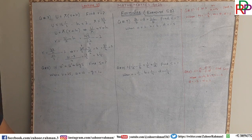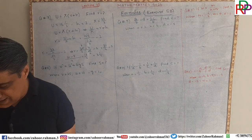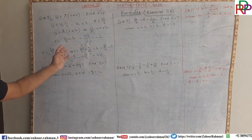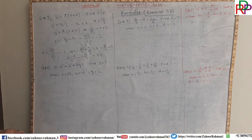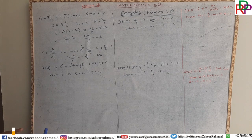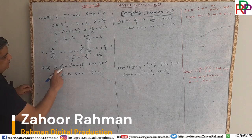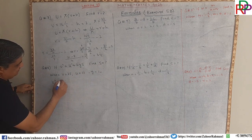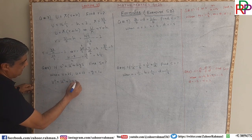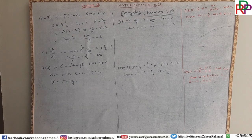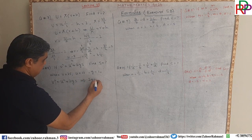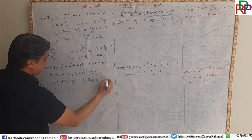Question number 8 says: v squared equals u squared plus 2gs. Find the value of s when v equals 25, u equals 12, and g equals 10. Let us first make s the subject. Writing v squared equals u squared plus 2gs as the original equation, we bring 2gs to one side: 2gs equals v squared minus u squared.